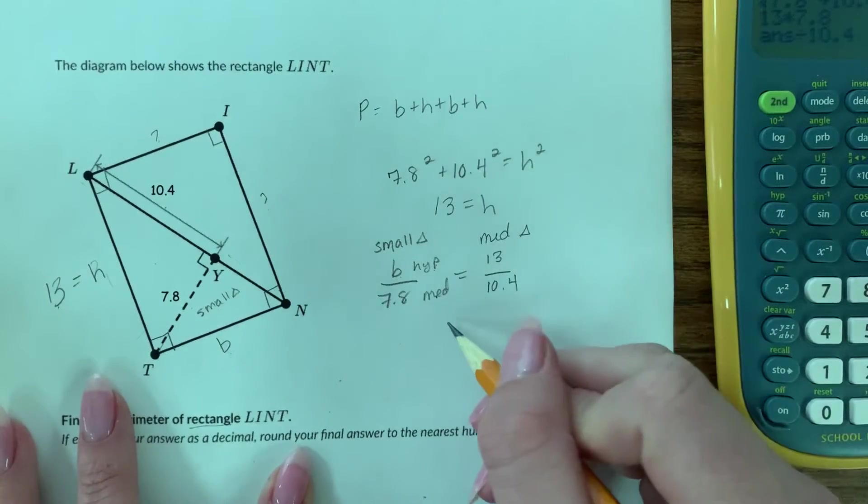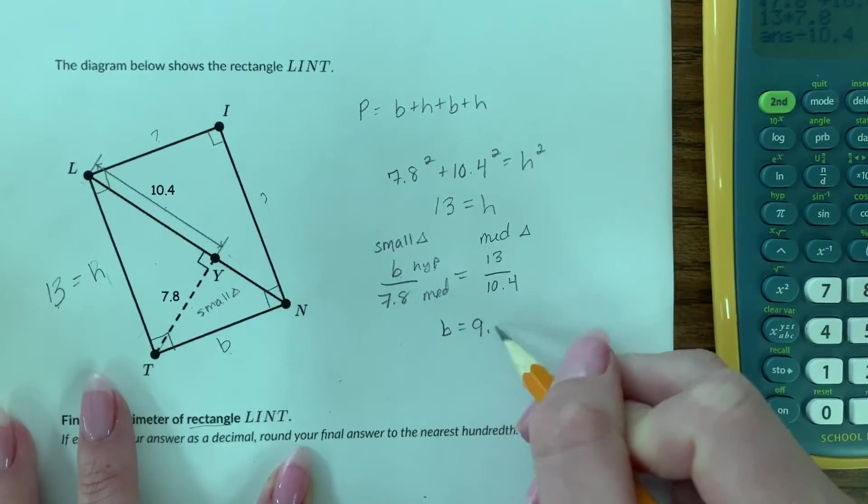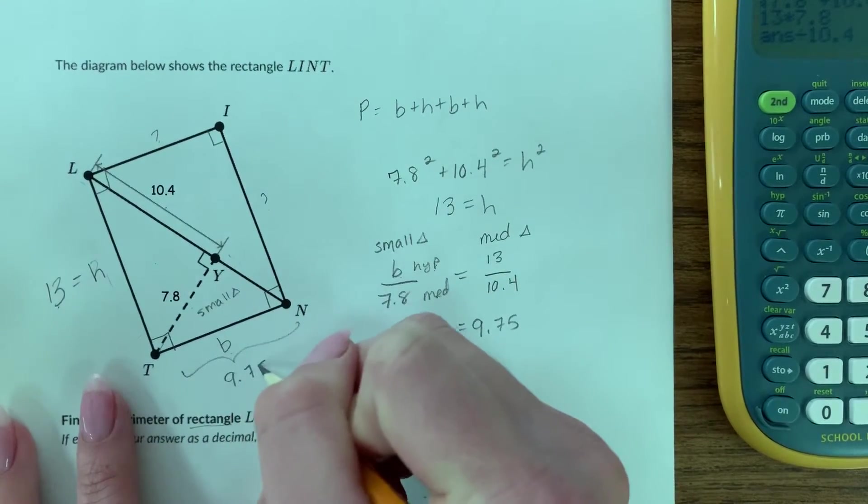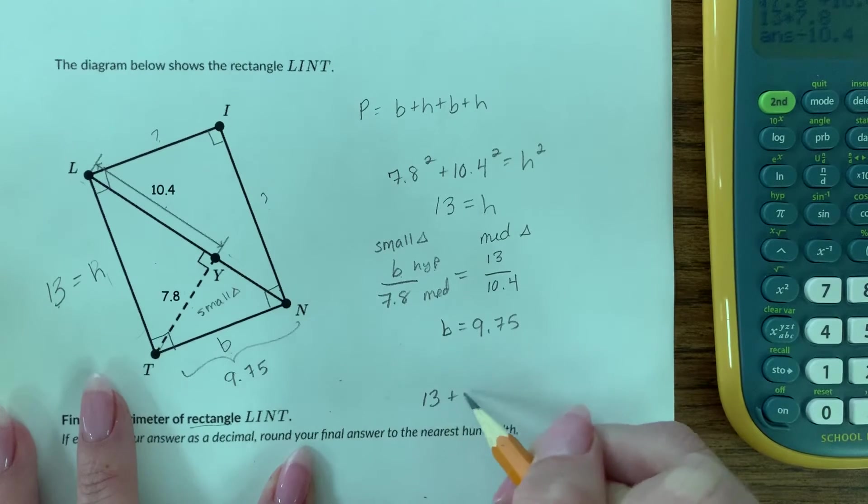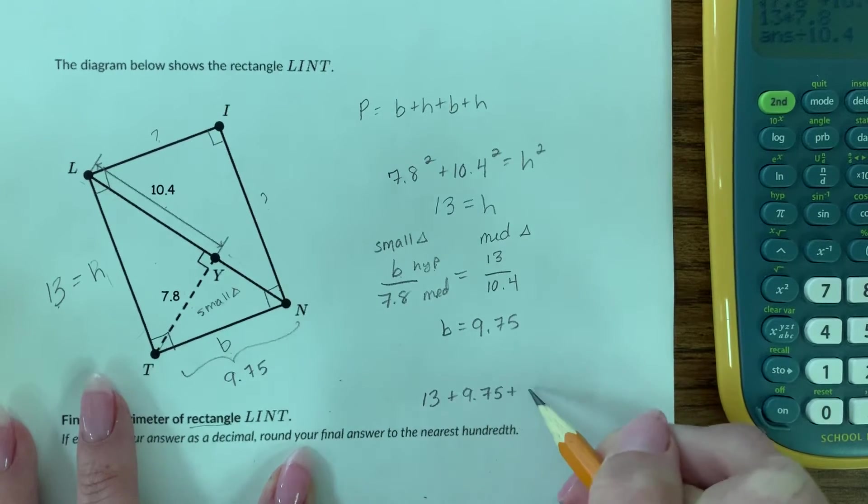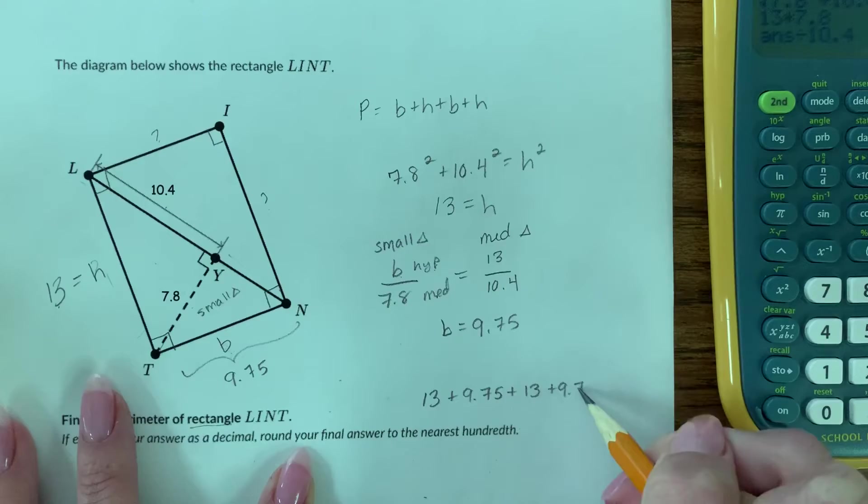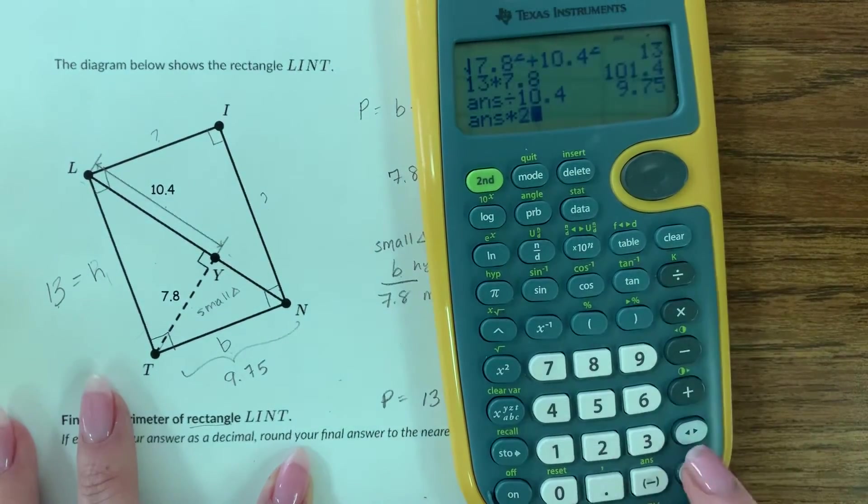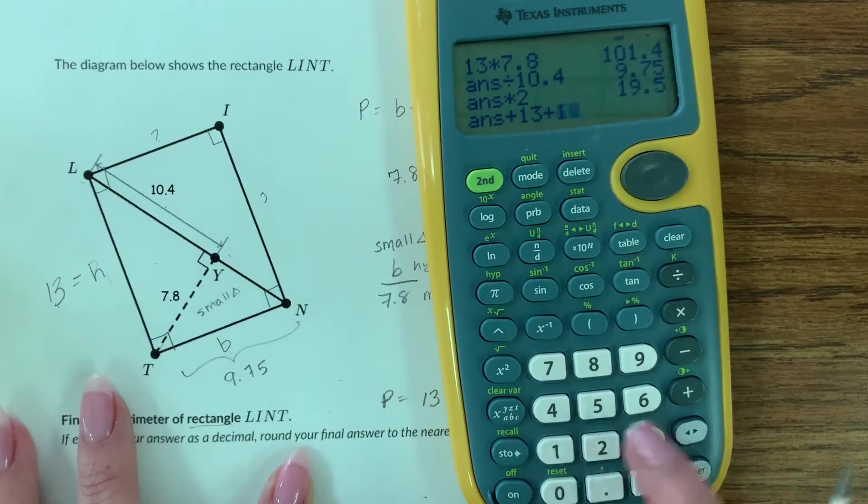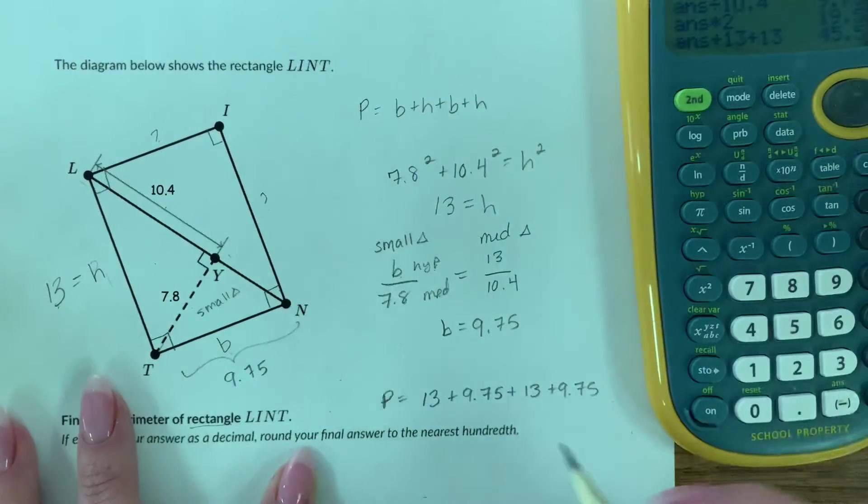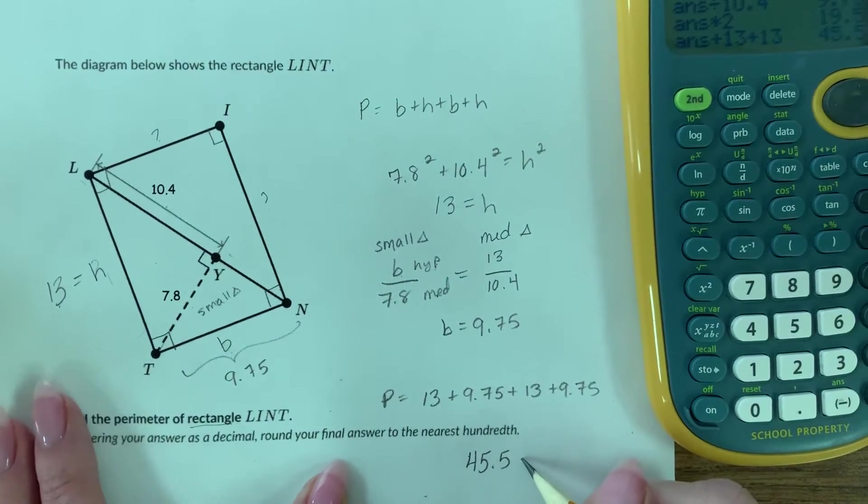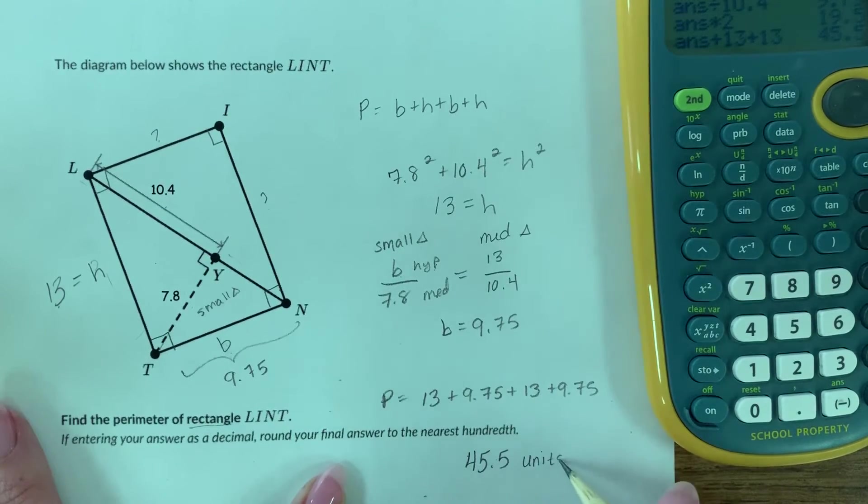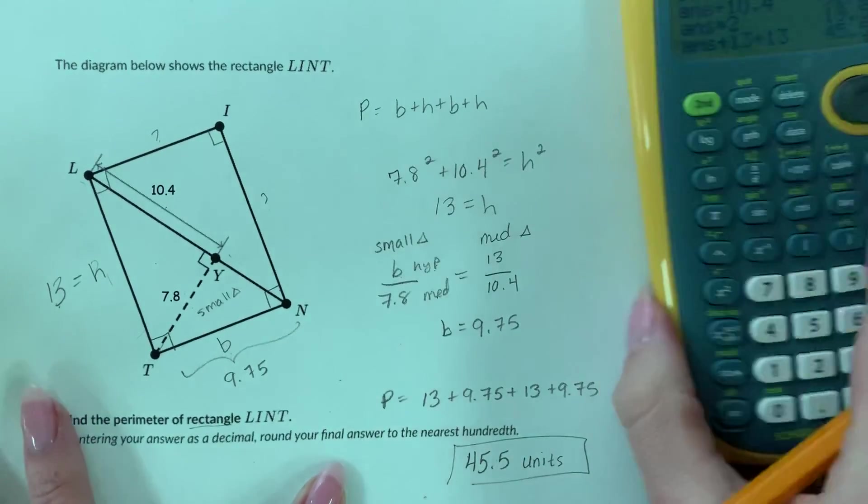So to find the perimeter, I can do 13 plus 9.75 plus 13 plus 9.75. So 9.75 times 2 plus 13 plus 13, so 45.5. It is in units. We don't know if it's inches or centimeters or whatever.